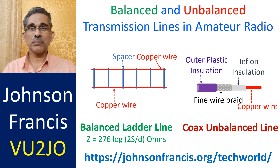Due to skin effect, another current flows on the outside of the shield from the connection point of the shield and antenna back to the connector on the transmitter, and hence to the ground. This third current depends on the length of the transmission line. If the line length is an integral multiple of half wavelength, it has a low input impedance and permits the flow of current. This can be prevented by the use of a balun, or balance-to-unbalanced transformer.